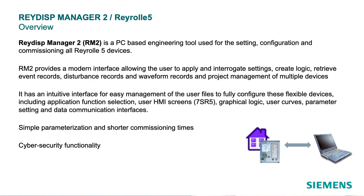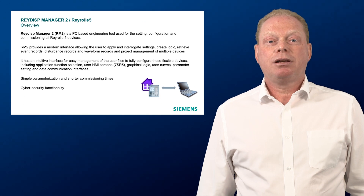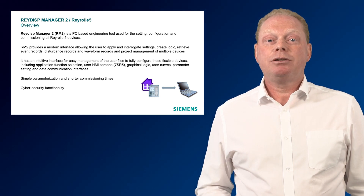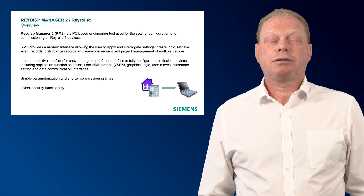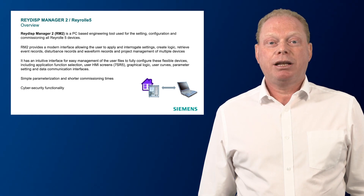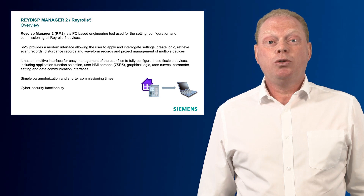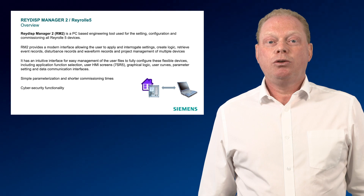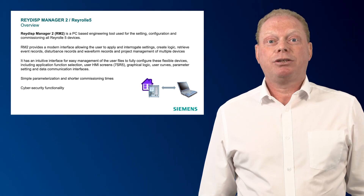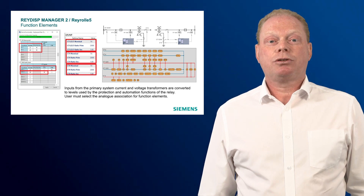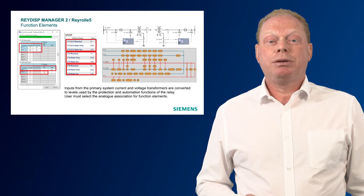Raidis Manager 2 (RM2) is a PC-based engineering tool used for setting, configuration and commissioning of all Reyrolle 05 devices. RM2 provides a modern interface allowing the user to apply and interrogate settings, create logic, retrieve event records, disturbance records and waveform records, and project management of multiple devices. It has an intuitive interface for easy management of user files to fully configure these flexible devices including application function selection, user HMI screens, graphical logic, user curves, parameter setting and data communication interfaces. The Reyrolle 05 can be configured to meet all applications including which current transformer inputs are used by the functions. This flexibility allows the same product to be used for multiple solutions.